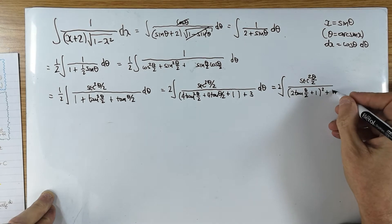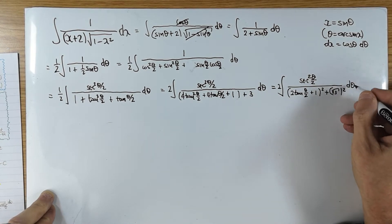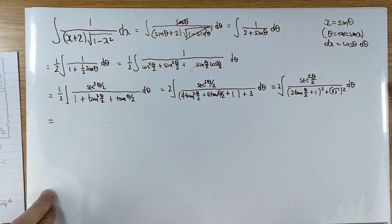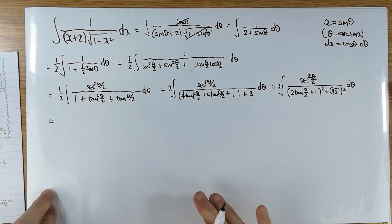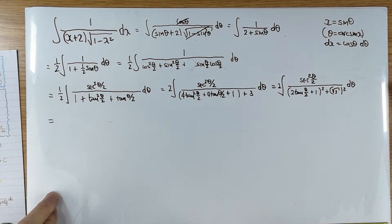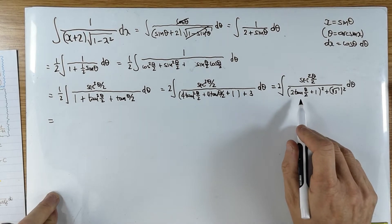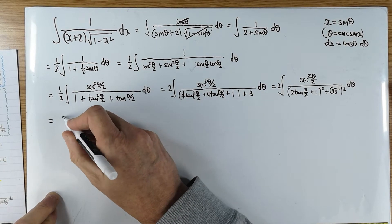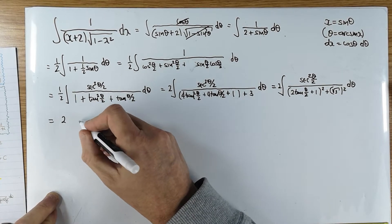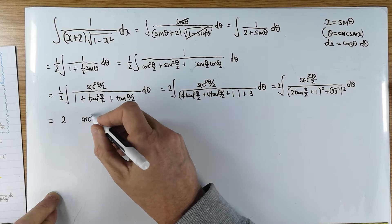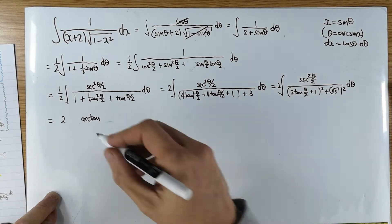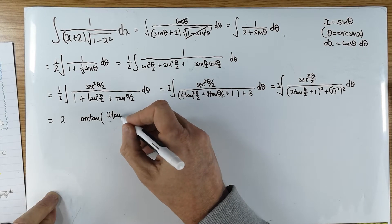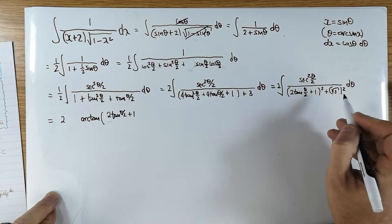This needs to be done by recognition, which takes a lot of skill — this is very high-level material. We recognise that this is an arctan of this kind of argument. What I need to differentiate to get something which looks like that is arctan of (2 tan(θ/2) + 1) / √3. The arctan formula has a 1/a at the front, so that is 1/√3.